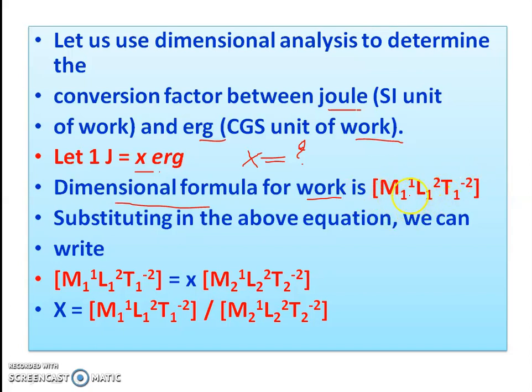In SI system, 1 Joule, the dimension is M1 to the power 1, L1 to the power 2, T1 to the power minus 2. We have to find the value of x. X equals M1 L1 squared T1 to the power minus 2 upon M2 to the power 1, L2 to the power 2, T2 to the power minus 2.